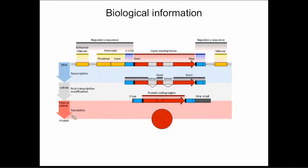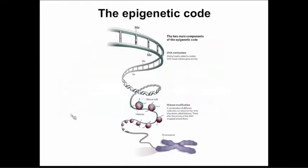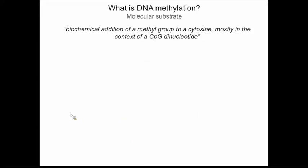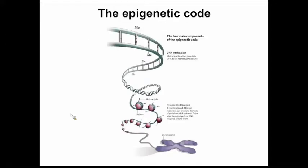Beyond DNA mutations and transcription, we have the regulatory part — the non-coding DNA that impacts expression — known as the epigenetic code. Epigenetics refers to mechanisms that control gene expression without altering the DNA sequence itself. The best known mechanism is DNA methylation, which is the biochemical addition of a methyl group to a cytosine, mostly in the context of a CpG dinucleotide. It's an on/off status that differs between cell types — a hepatocyte and a muscle cell have the same DNA sequence but different methylation patterns at specific CpG sites.